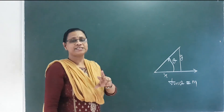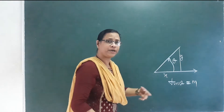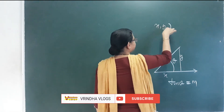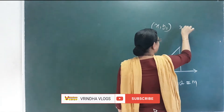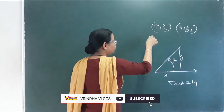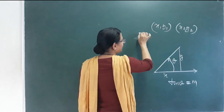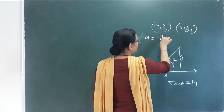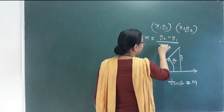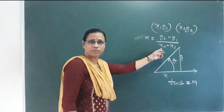If you have two points (x1, y1) and (x2, y2), the slope formula is equal to (y2 − y1) / (x2 − x1). This is the slope formula.